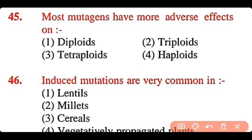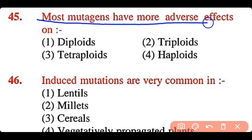Question 45: Most mutagens have more adverse effect on: diploids, triploids, tetraploids, or haploids. The correct answer is option 1. Most mutagens have an adverse effect on diploid organisms.